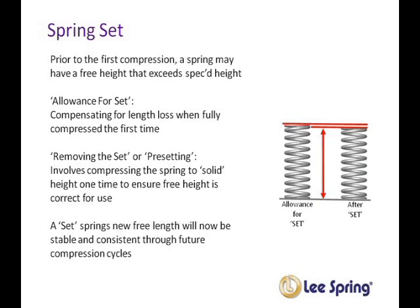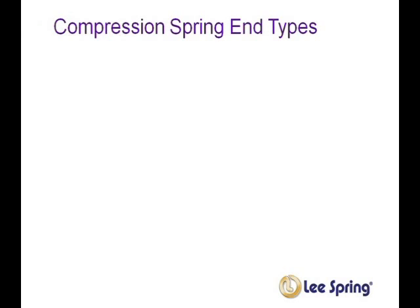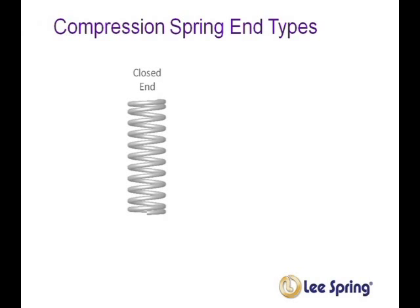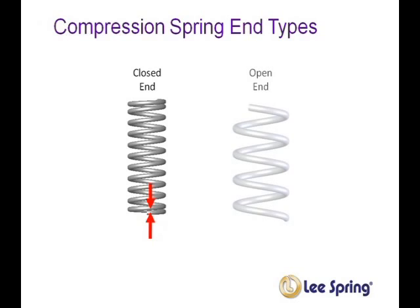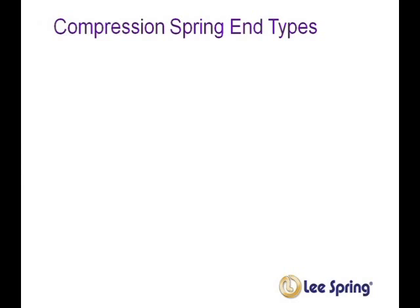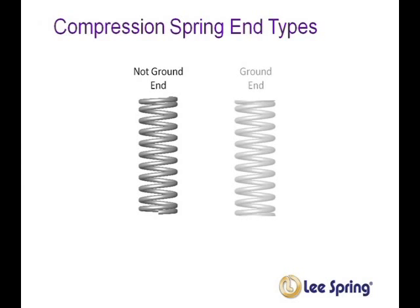Now let's look at spring ends. The first spring has a closed end, where the end coil pitch is reduced so the end coils touch. The next spring has an open end, where the coils are consistent with no pitch change through the end of the spring. Another end type for compression springs is the not ground type and the ground type. The ground end type spring is ground flat, where the not ground type has a less parallel end.